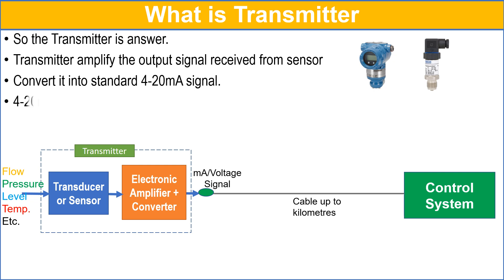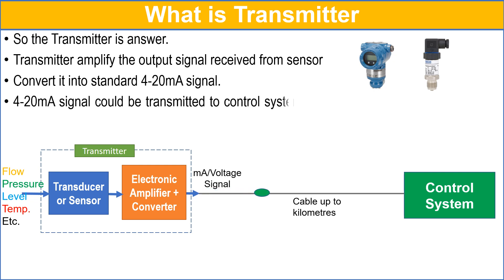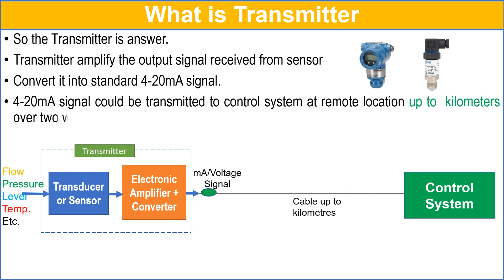The transmitter amplifies the output signal received from the sensor and converts it into the standard 4 to 20 milliampere signal. This 4 to 20 milliampere current signal can be transmitted to a control system at a remote location up to kilometers over a two-wire loop system.